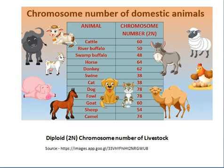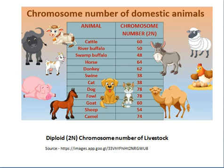Animals usually have a diploid number of chromosomes, which is called 2n. In plants they can have 3n, 4n, or 5n, but for animals we work with 2n. Cattle have 60 chromosomes, river buffalo 50, swamp buffalo 48, horse 64, donkey 62, swine 38, cat 38, dog 78, fowl 78, goat 60, sheep 54, and camel 74. You need to remember these chromosome numbers as they are asked in exams.